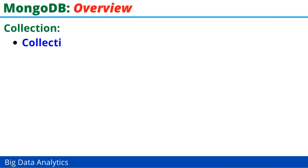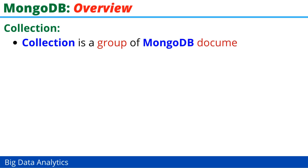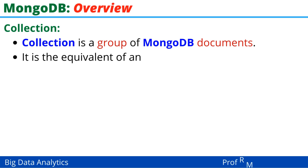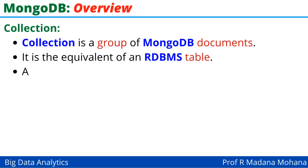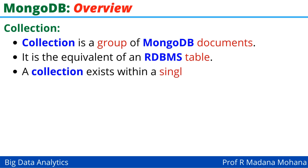Now, what is a collection? A collection is nothing but a group of MongoDB documents. It is the equivalent of an RDBMS table in a Relational Database Management System.